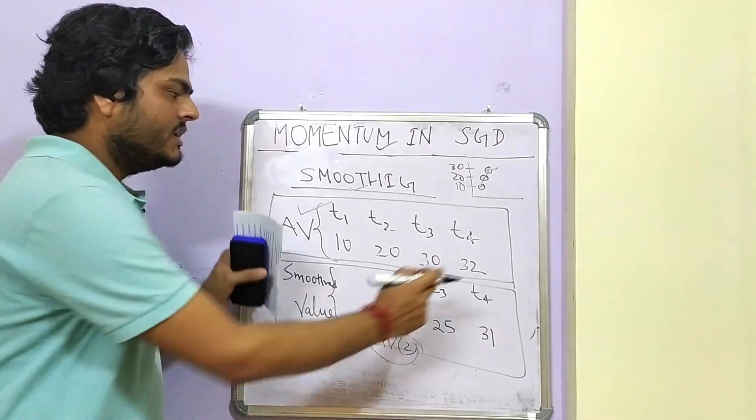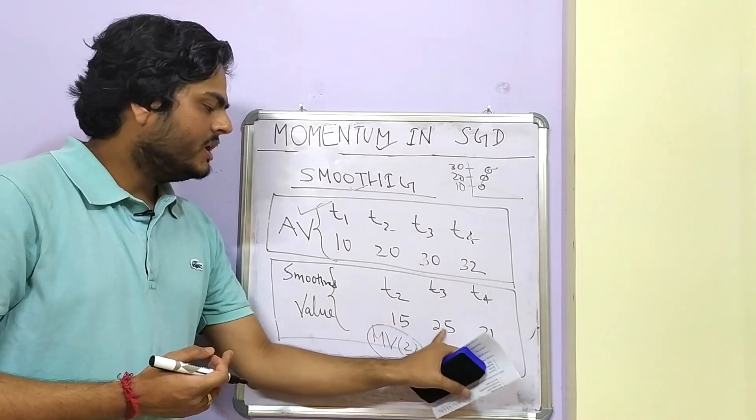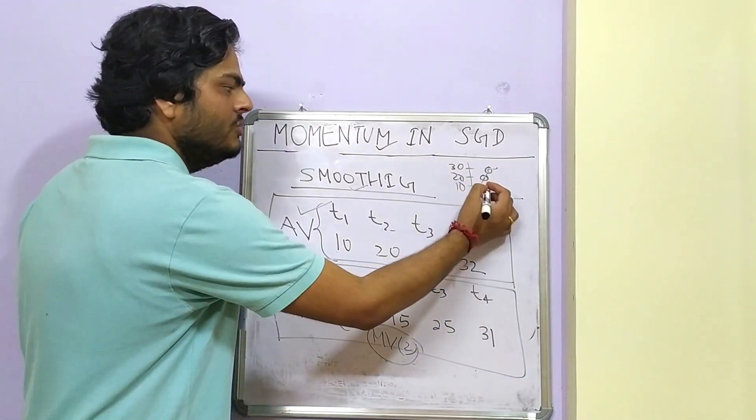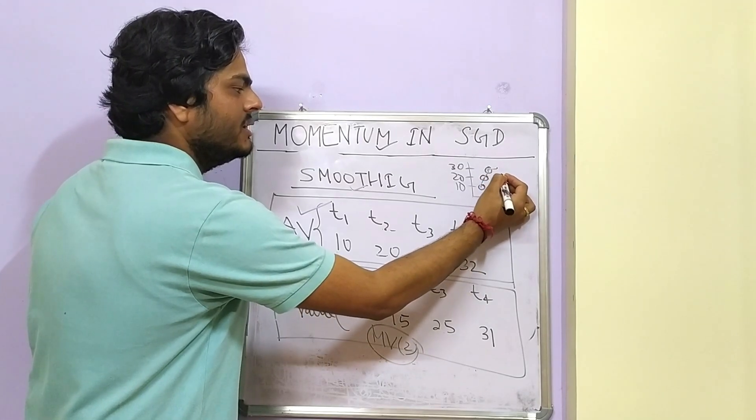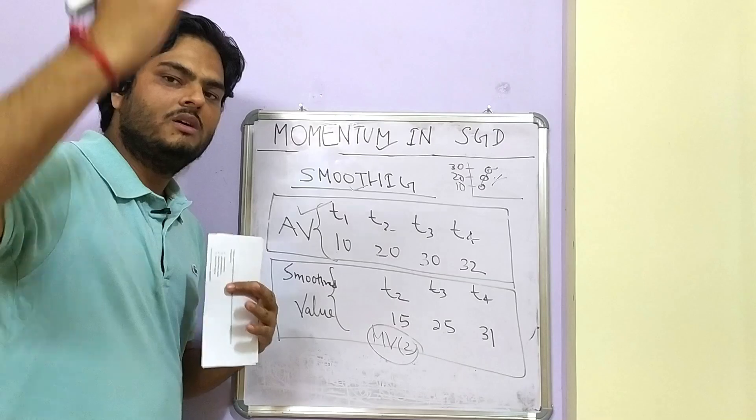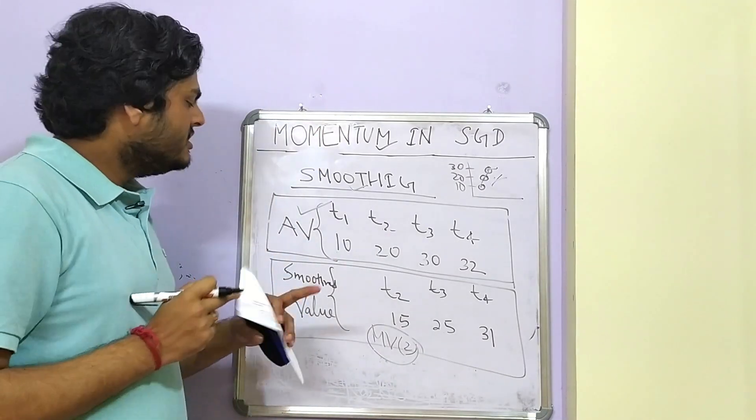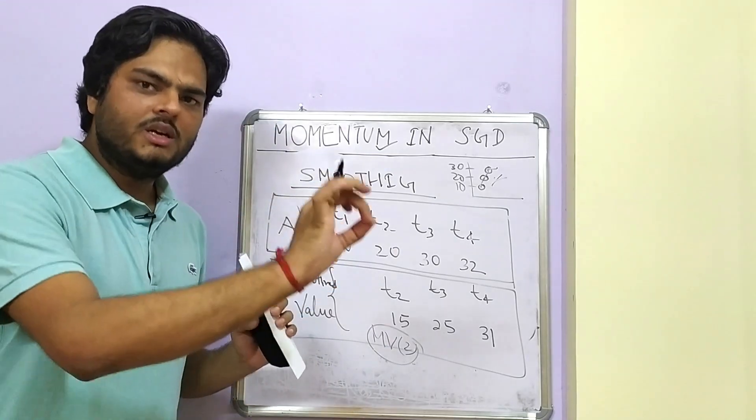Now, this is the actual values and these are the smoothened values. If we plot 15, 25 and 31, you will see that the curve is not moving that fast like it was moving before. I mean to say ups and downs. This process is called smoothing the curve.